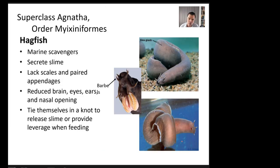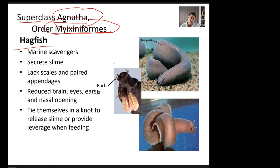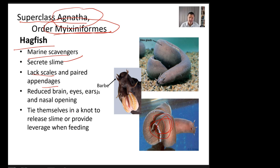Our first group of fish is superclass Agnatha, order Myxiniformes — the hagfish. These are marine scavengers that secrete slime on the outside of their body. They lack scales and paired appendages. When attacked, they tie themselves in a knot and secrete slime to make it difficult for predators. They also use that knot as leverage when pulling food off, since the Agnatha — 'a' meaning without, 'natha' meaning jaws — lack chewing jaws.